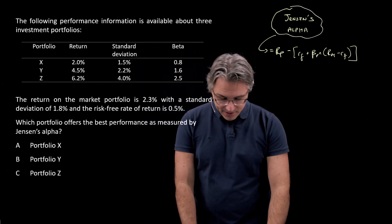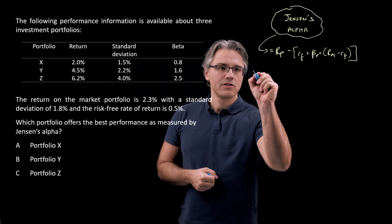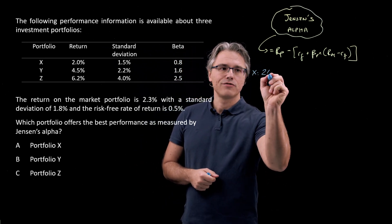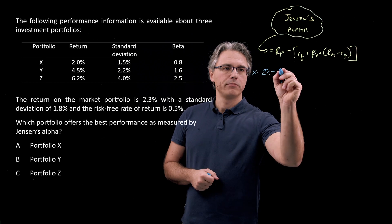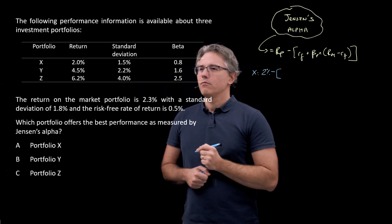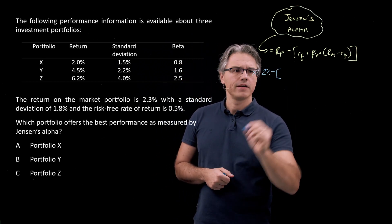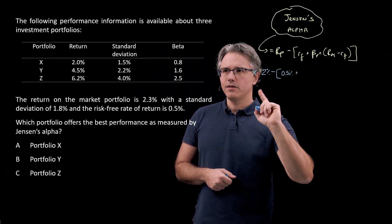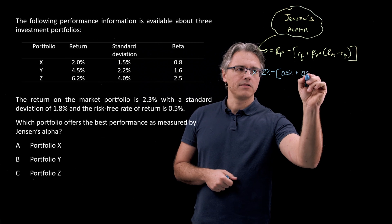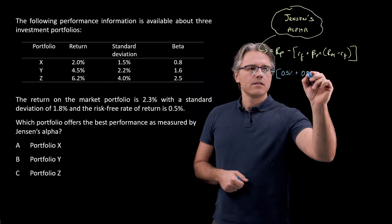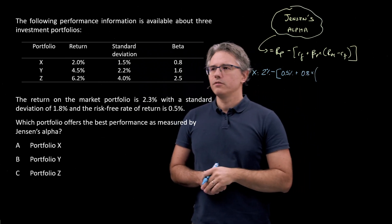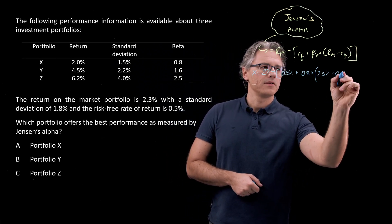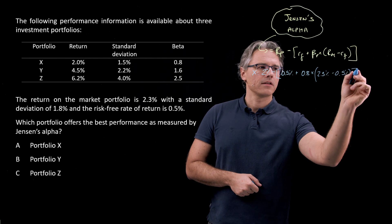So let's compute this for portfolio X to start with. Its return is 2%. What would be predicted by the CAPM model? Well, the RF is 0.5% plus the beta on this specific portfolio being 0.8 times the rate of return on the market, which is 2.3 minus 0.5%. Close the bracket.